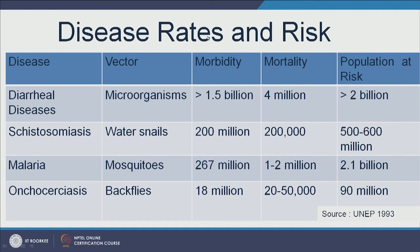Now let's look at disease rates and risk. Diarrheal diseases — note the units: billion, million, thousand — are more of an issue than schistosomiasis, more than malaria, and more than diseases caused by blackflies, and they also affect a higher population at risk. These numbers are extremely high. Every single human life is important, and I hope this gives you an idea of how much work needs to be done when it comes to water treatment and ensuring the potability of water by the time it reaches the consumer.